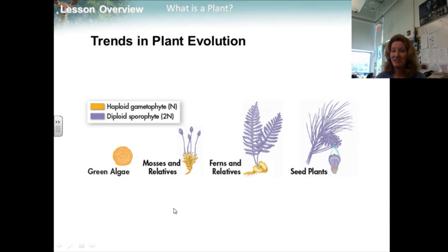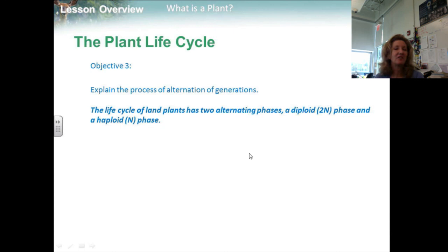And that's what you need to know for right now. So objective three is explain the process of alternations of generations. The life cycle of a land plant has two alternating phases. You go from a diploid phase and a haploid phase.